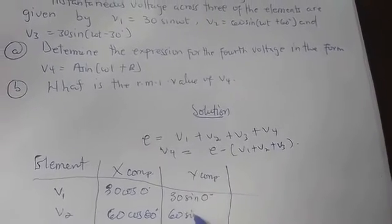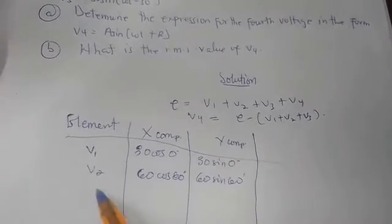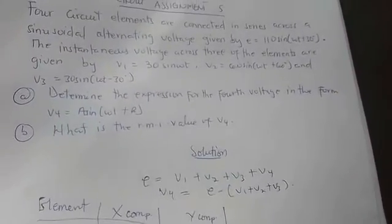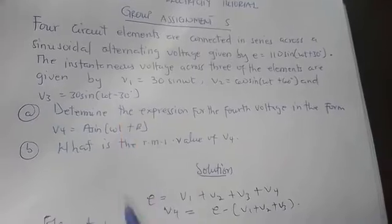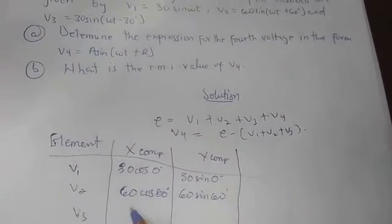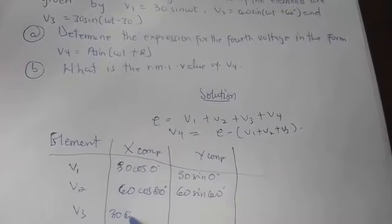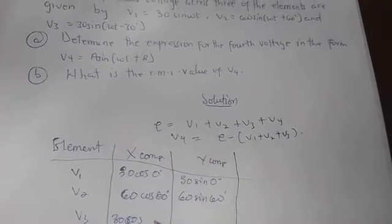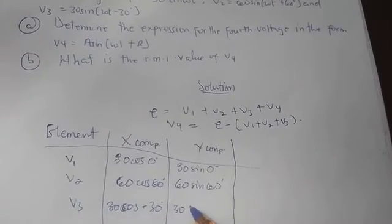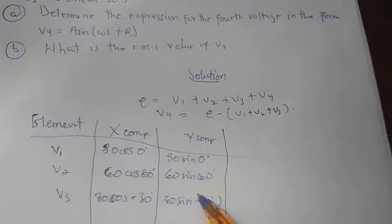For V3, the phase angle is negative 30° (lagging), so the X component is 30 cos(-30°) and the Y component is 30 sin(-30°). We use the negative angle — we don't ignore the negative sign.